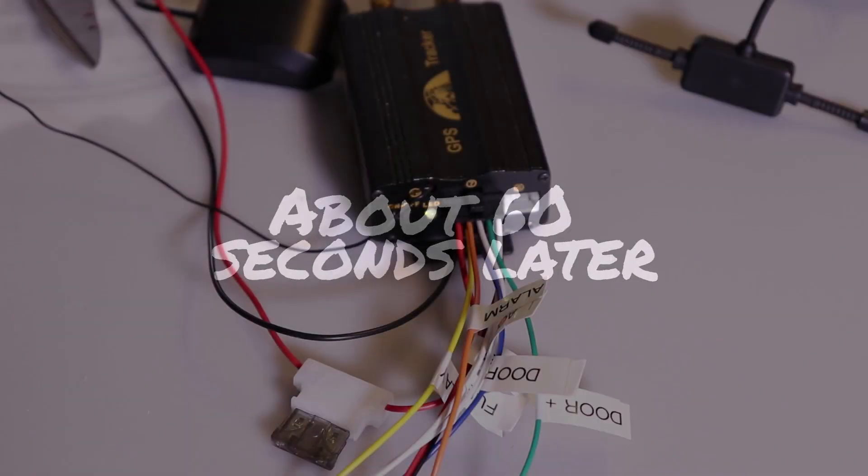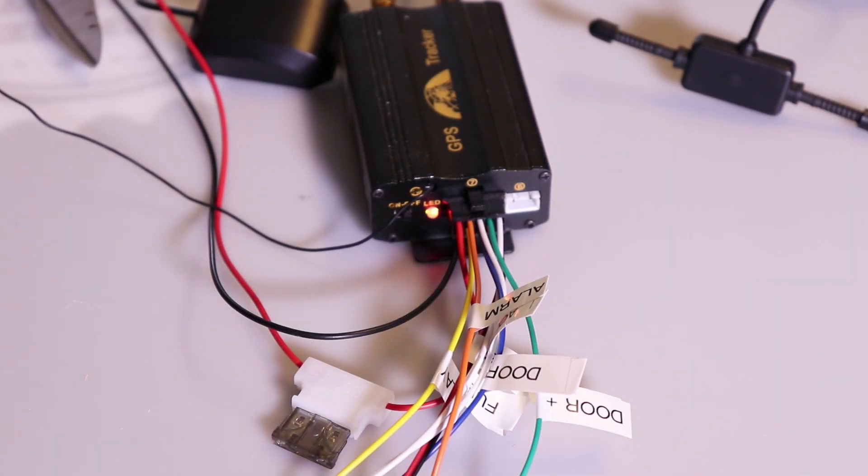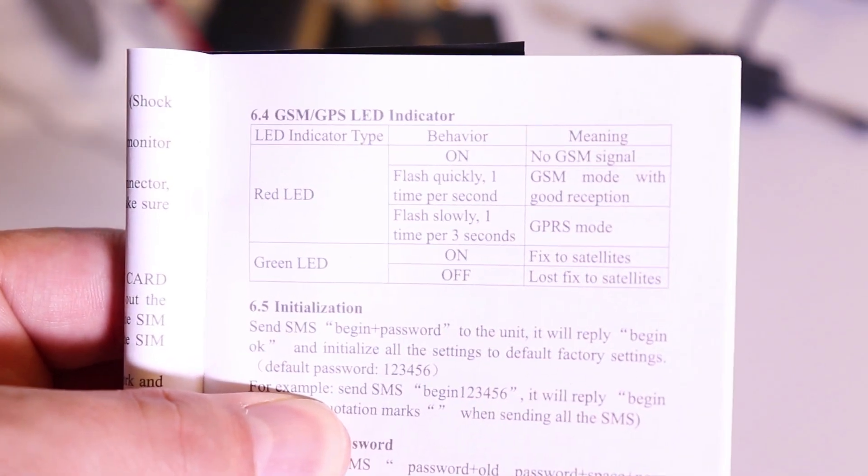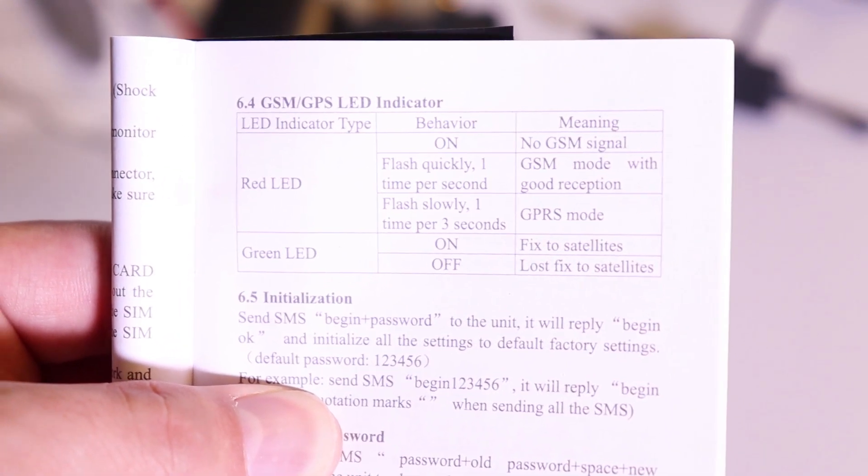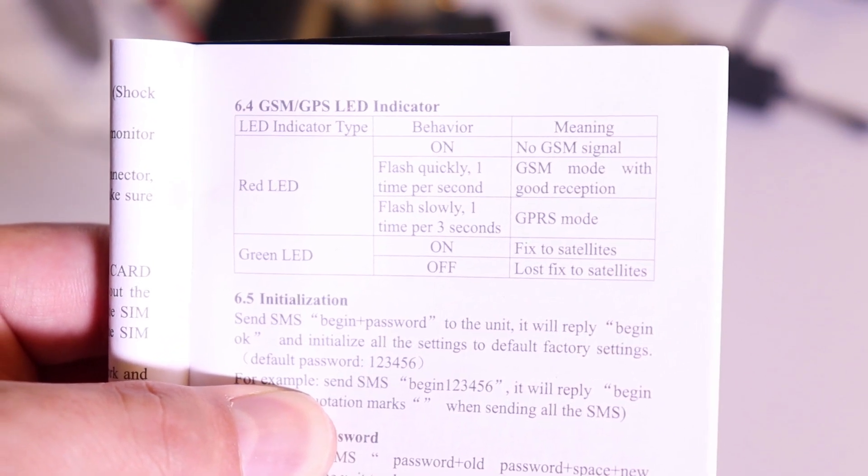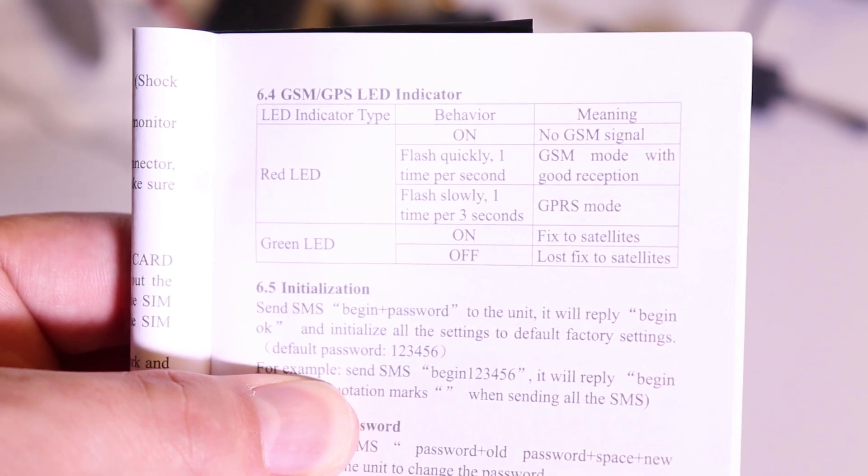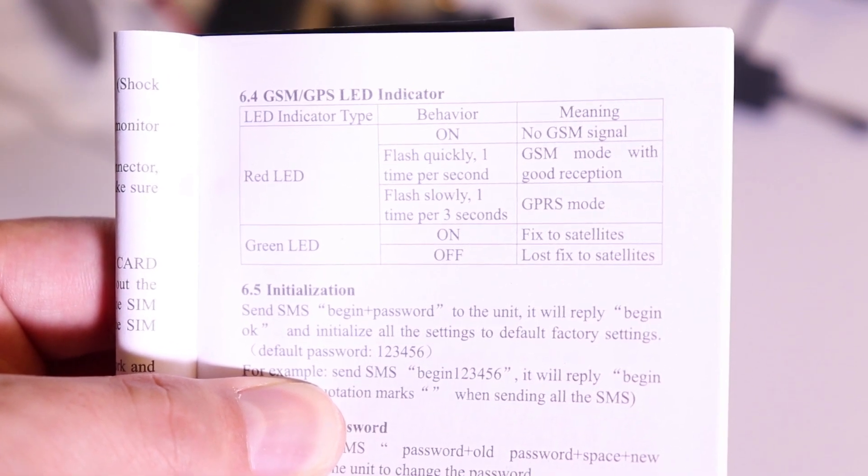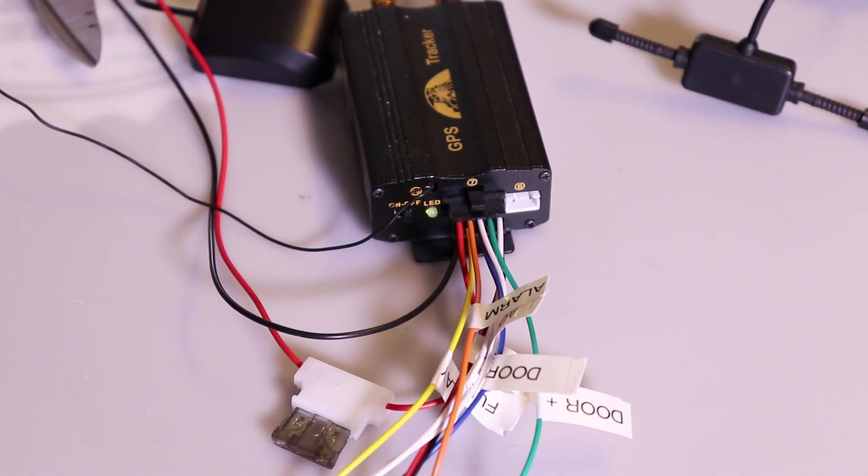Pretty quickly after I plugged this in, I got a green LED and a red blinking LED. So according to the manual, a red LED that's flashing quickly one time per second means I've got good GSM, and the green LED means I've got a good GPS fix. So I've got all the signals I need.